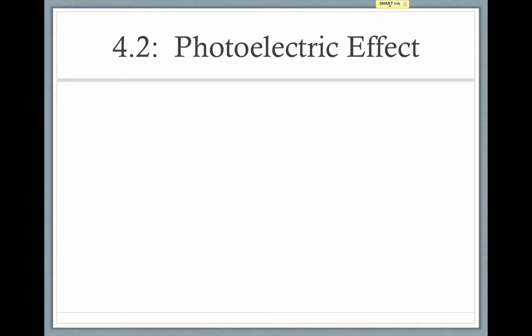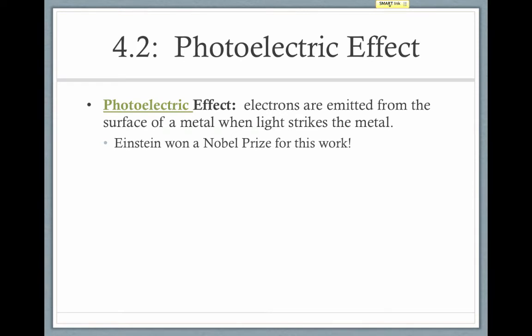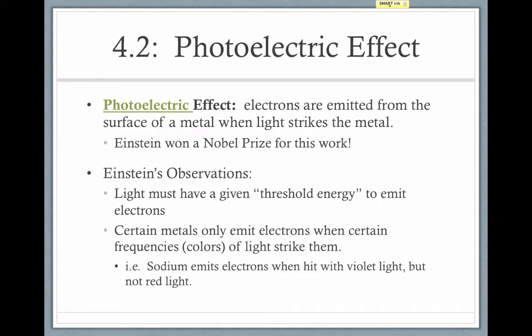This idea was further supported by an experiment done by Einstein. Einstein discovered the photoelectric effect. He found that electrons are emitted from the surface of a metal when light strikes the metal. But interestingly, he found that light must have a certain energy in order to cause the electrons to be emitted. Simply just shining light on a piece of metal did not always cause electrons to be emitted. It had to have a certain energy. He also found that certain metals only emit electrons when certain frequencies or certain colors of light strike them. So, in other words, when light was shone at a piece of sodium, it only emitted electrons when it was hit with violet light, not red light or green light or orange light, only violet light.